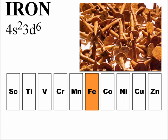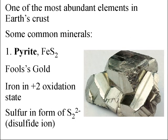Iron is the sixth member of the first-row transition metals. Its electron configuration is 4s² 3d⁶. Iron is one of the most abundant elements in the earth's crust. Common minerals include pyrite, FeS₂ — also known as fool's gold for its golden appearance. Although you might predict iron is +4 since sulfur forms a −2 ion, sulfur actually forms the disulfide ion (S₂²⁻, analogous to peroxide), so iron is in the +2 oxidation state in pyrite.